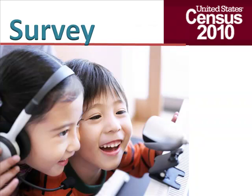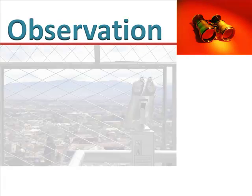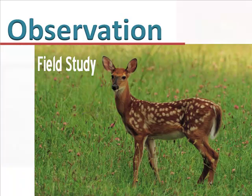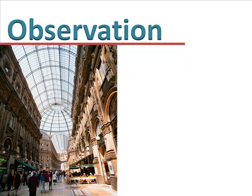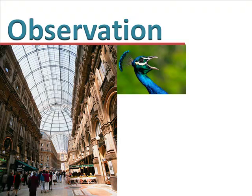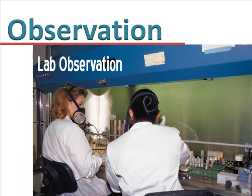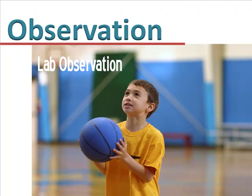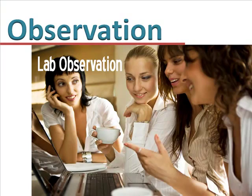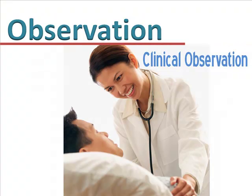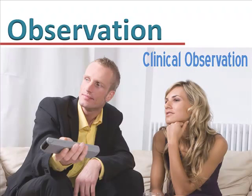If you would rather observe than interview, you can elect to do a field study, laboratory observation, or clinical observation. A field study is a naturalistic observation — hiding in the woods to watch animals or sitting in a mall to watch shoppers. Laboratory observation is less naturalistic but more controlled; you set up your lab and watch children at play, teens studying, or couples arguing, using one-way mirrors or simply sitting quietly in the corner. Clinical observations can involve visiting the patient several times throughout the day, watching through a window, or monitoring on closed-circuit video.